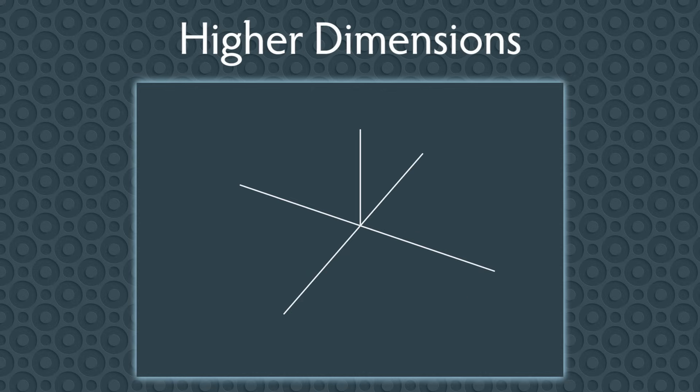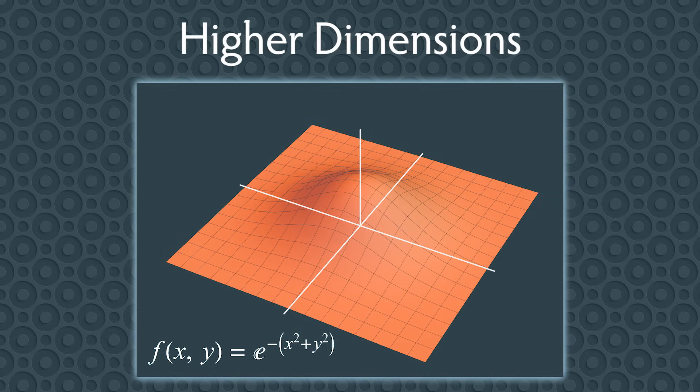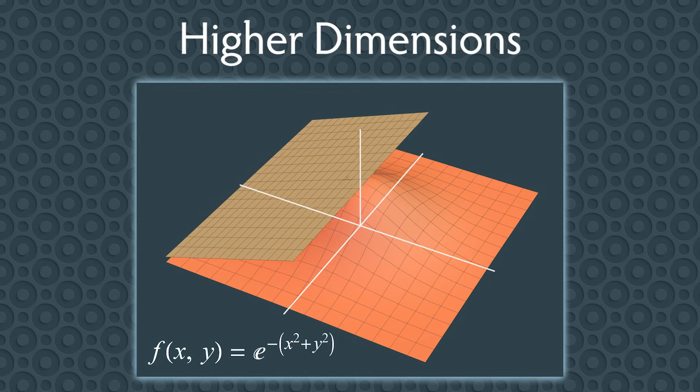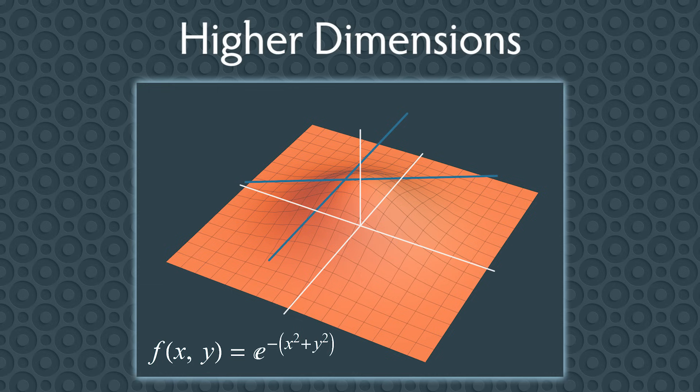For example, consider a function with two inputs and one output, like f of x, y equals e to the negative x squared plus y squared. Earlier we computed the derivative by computing slopes of tangent lines, but in higher dimensions things are a bit more complex. This is because on a surface, instead of a tangent line, you'll have a tangent plane. To handle this, you'll compute the derivative both in the x direction and in the y direction. We call these partial derivatives. These two partial derivatives are what you need to describe the tangent plane.